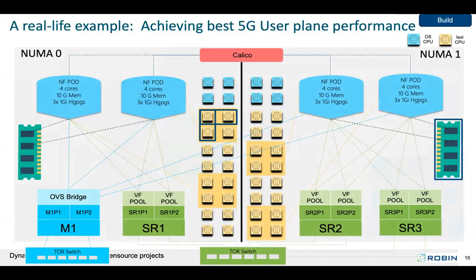Here is a real-life example for NF deployment. The NF pods you see here can be part of the same application or different applications. If you consider the far edge, you should be able to deploy different DUs on the same physical host. The blue CPUs in the middle are isolated non-isolated CPUs used for OS, Kubernetes, and the platform, while the yellow ones are isolated CPUs for the application. All pods are getting CPU, memory, SR-IOV devices, huge pages, and so on from the same NUMA node. When you go to NUMA node 1, the pods will get all resources locally.